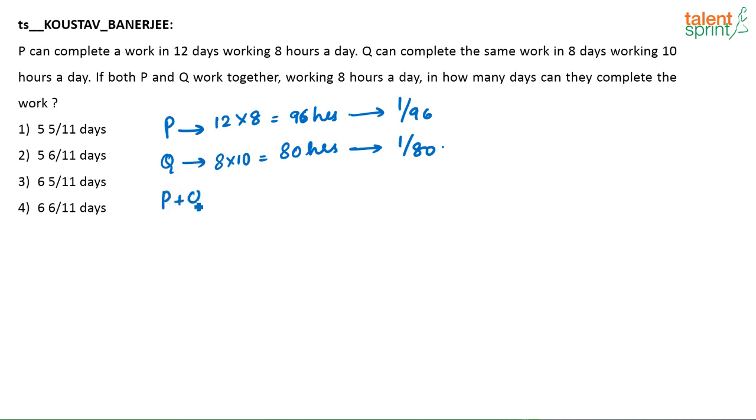Now P and Q are working together. So P and Q in 1 day, how much work will they do? 1 by 96 plus 1 by 80, which is nothing but 176 divided by 96 into 80.